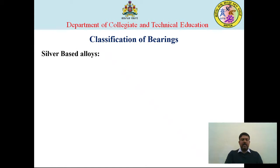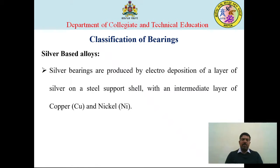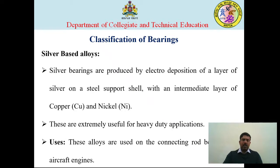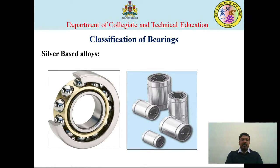Next we move on to silver-based alloys. Silver bearings are produced by electro-deposition of a layer of silver on a steel support. The intermediate layer is made of copper and nickel. This gives a very strong composition that can withstand any type of load. These are extremely useful for heavy-duty applications, such as connecting rod bearings in aircraft engines. You can see the coating of silver on a bimetallic copper-based bearing material.